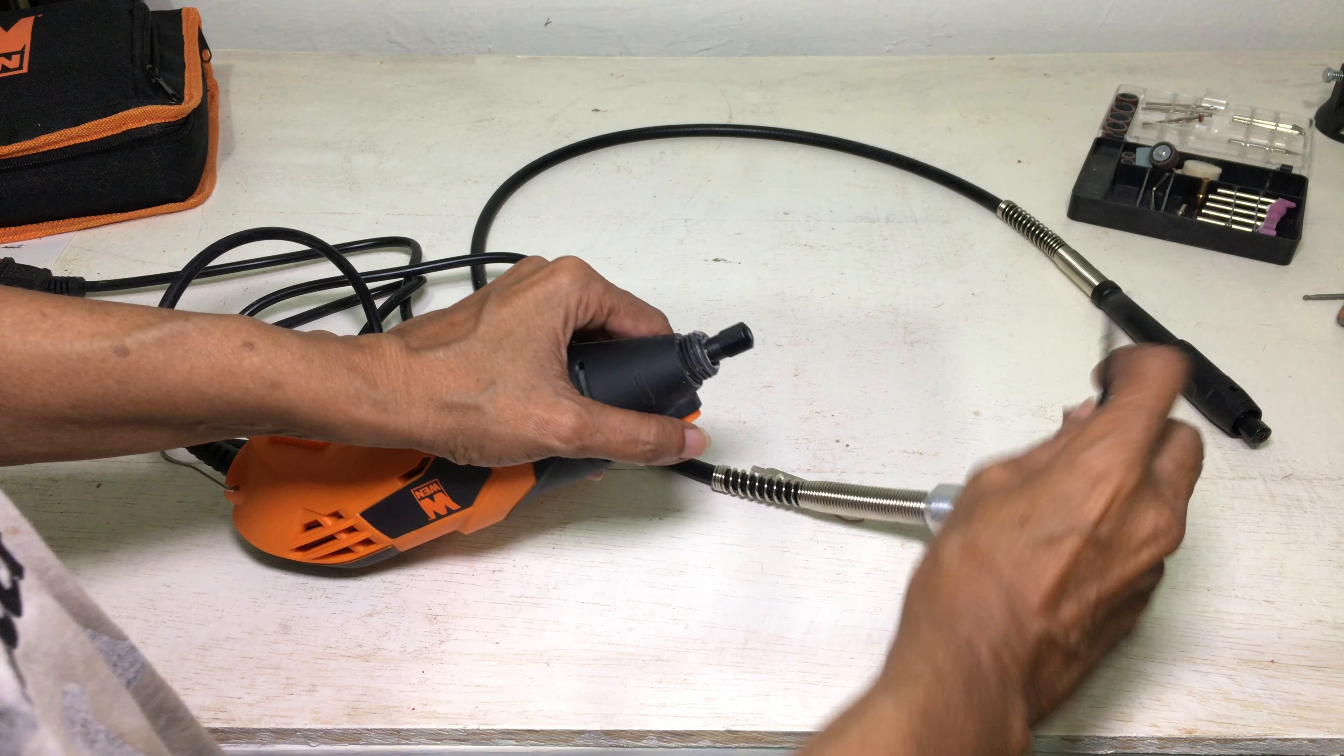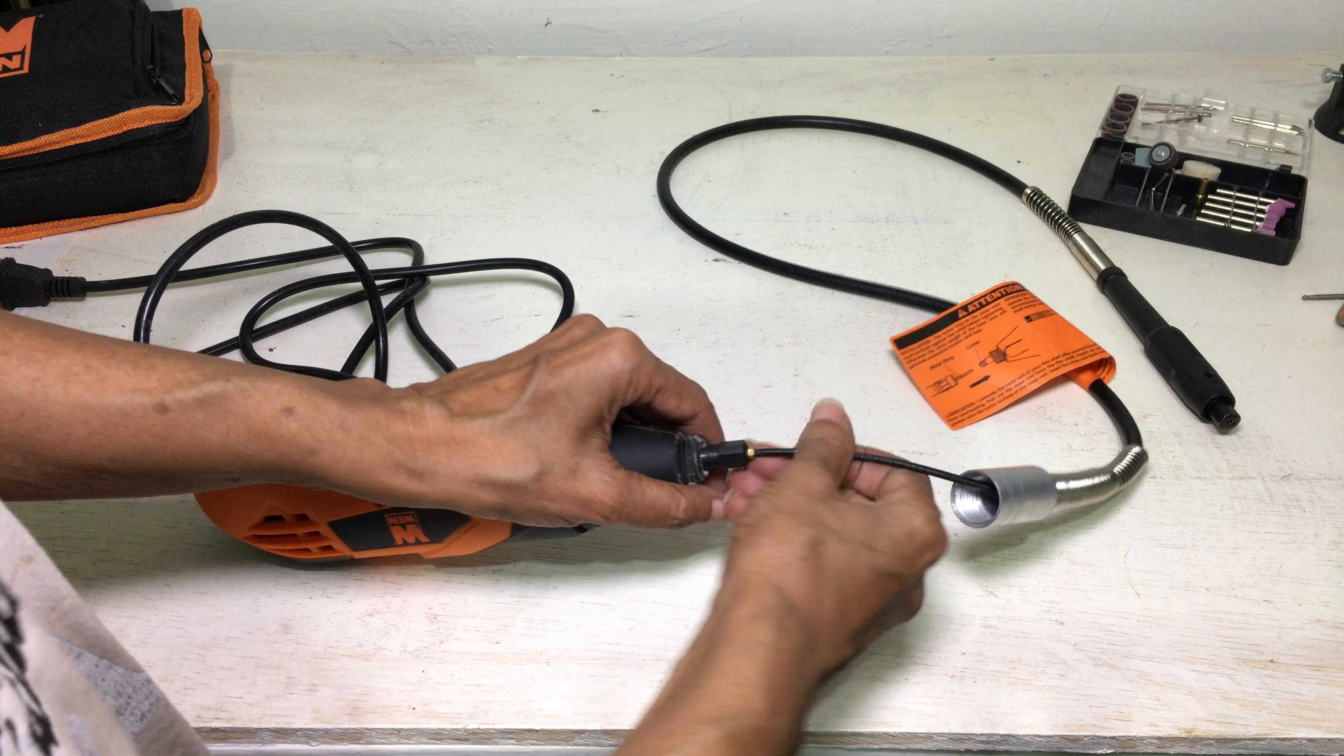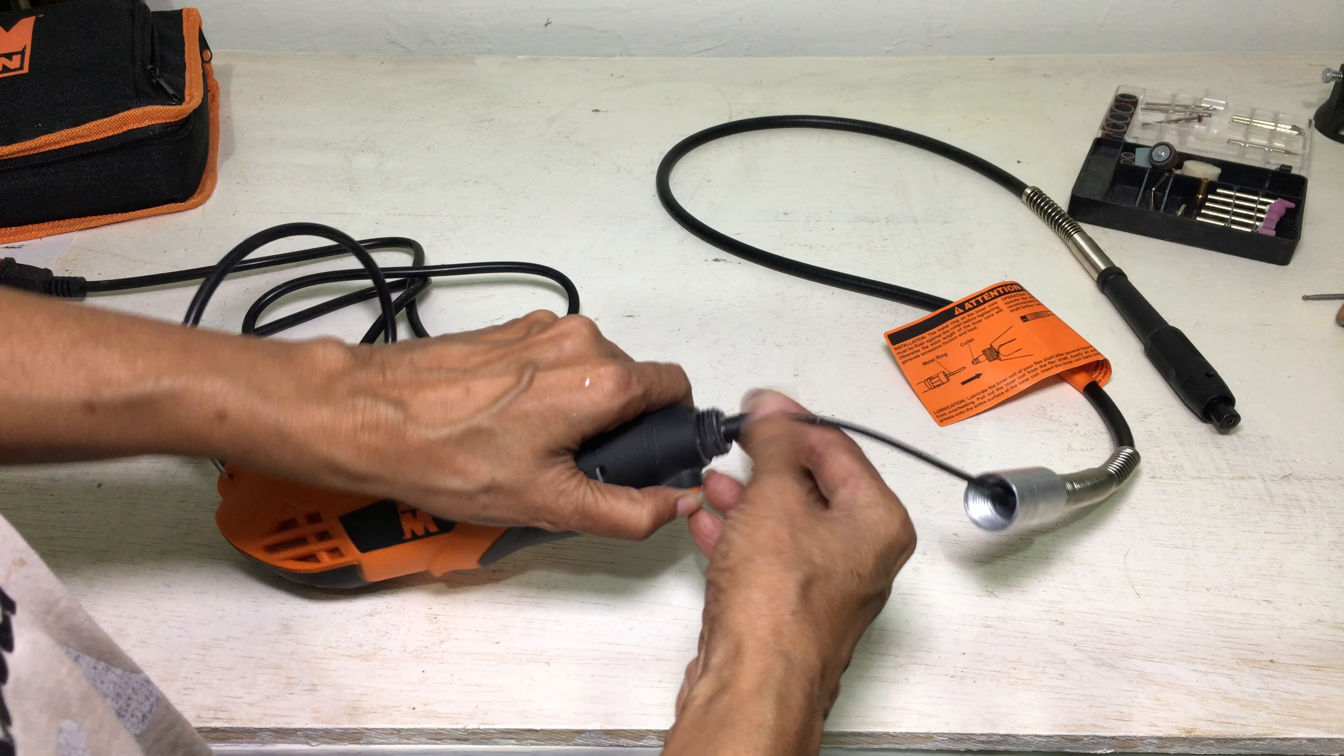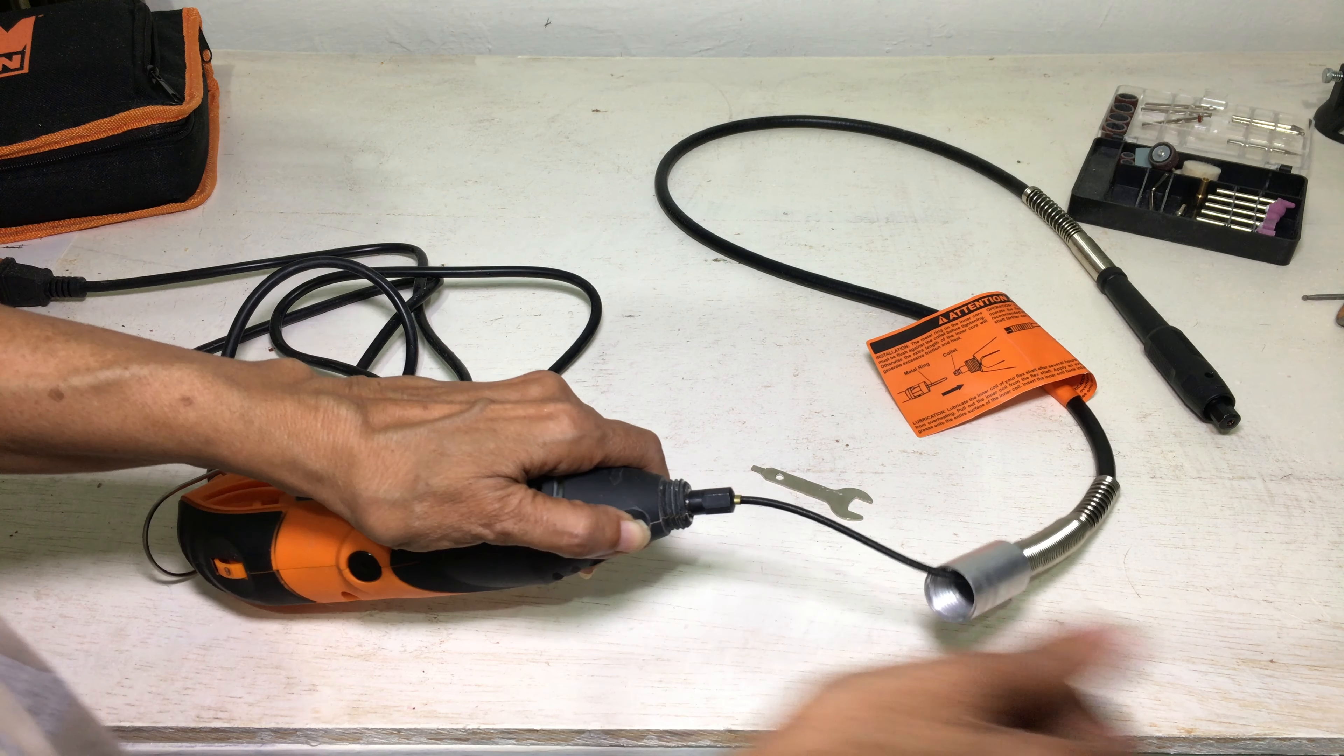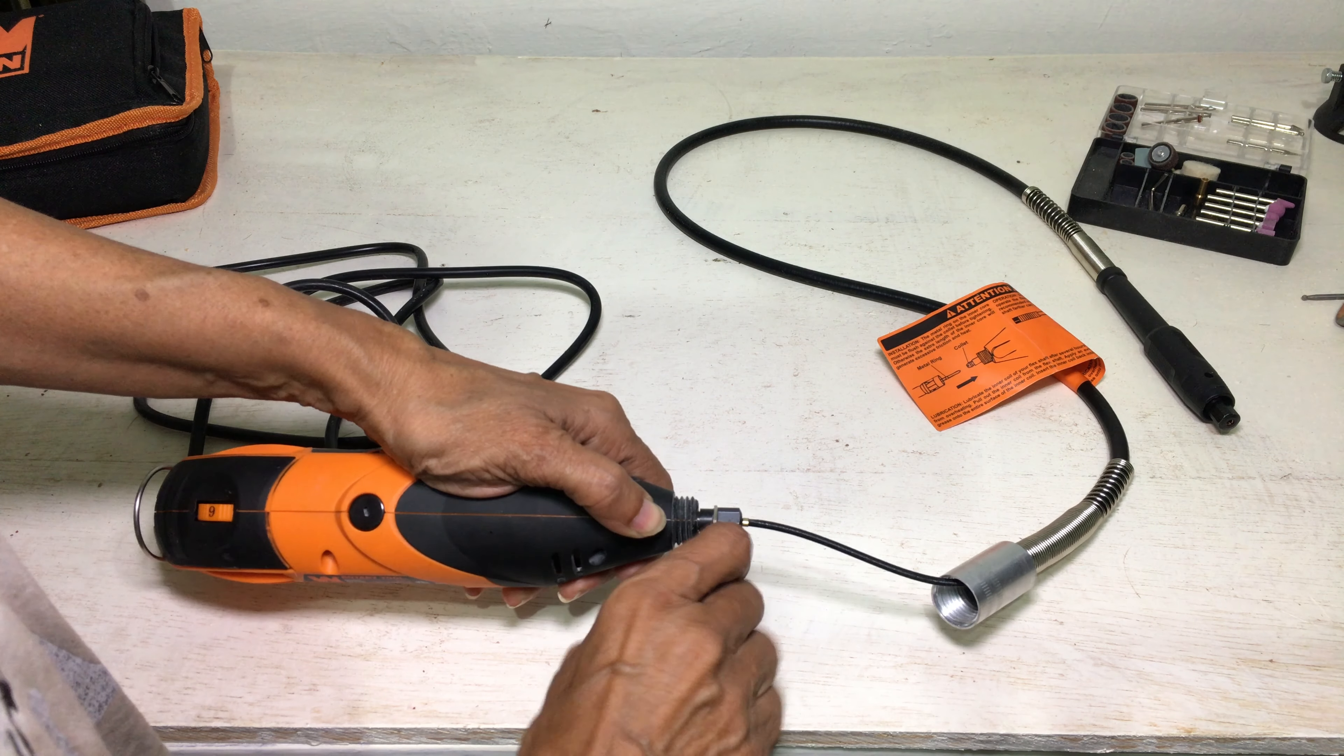Holding the flex shaft, pull the inner core shaft out about 2 to 3 inches and insert it into the collet, making sure that the gold ring is pressed in firmly. Press down on the spindle lock button and tighten the collet nut with the wrench.